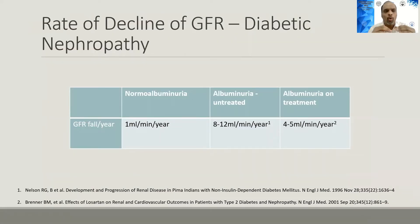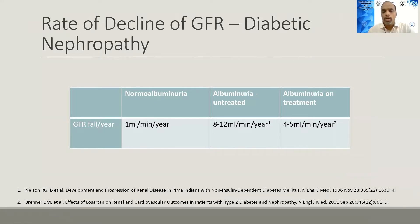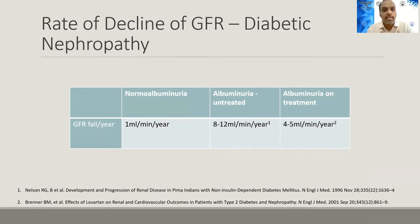To provide a broad framework: in normoalbuminuric patients, a GFR drop of less than 1 ml/min/year is expected, similar to age-related decline. Patients with untreated proteinuria and poorly controlled blood pressure may decline at 8 to 12 ml/min/year, whereas patients on treatment as seen in the RENAL trial of losartan showed decline reduced to about 4 to 5 ml/min/year. KDIGO defines rapid decline in GFR as more than 5 ml/min/year or more than 4% per year — in such patients, a non-diabetic renal disease should be suspected.